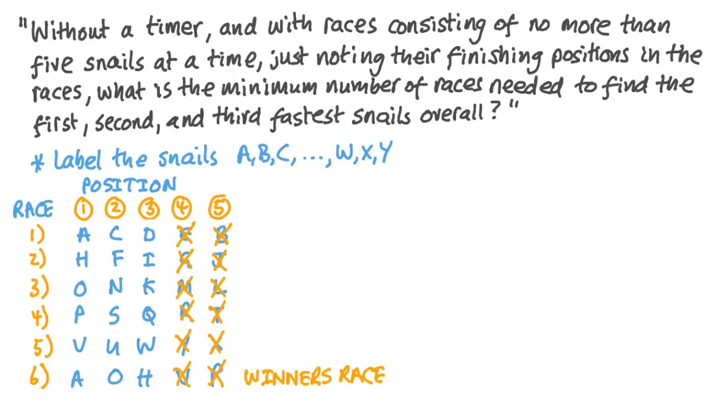Now, row six is the winner's race. And we can see that snail A not only beat everybody in its first race, but it also beat all of the winners from the final race. So snail A must be the fastest snail overall. Now, we can also see from this that snail V finished fourth in that race. So if it's not one of the top three, then anything slower than V is also not one of the top three. So we can discount V, U, and W from our reckoning. Likewise with P. It finished last in the winner's race. So anything slower than P certainly can't be one of the top three.